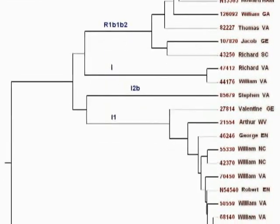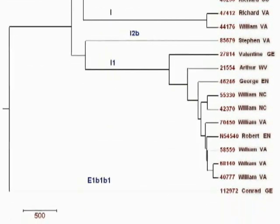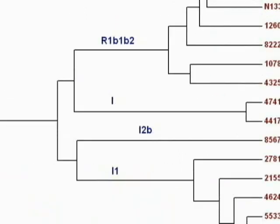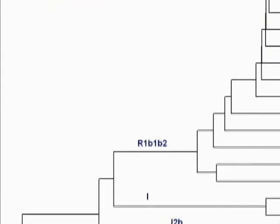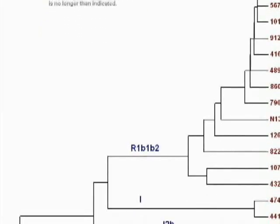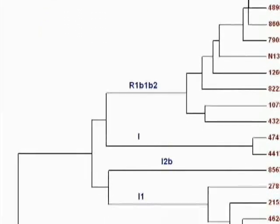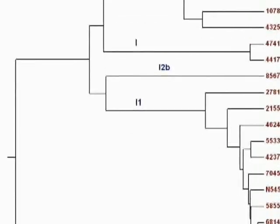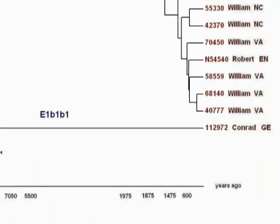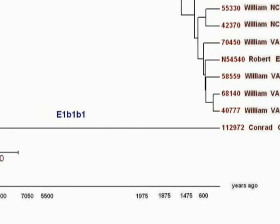Kits that are not so similar will not be so close together on the graph. First, you can see that the haplotype groups branch off from each other, because haplotype groups were formed a very long time ago. In this graph, the haplotype groups are R1, B1, B2, I, I2B, I1, and E1B1B1.